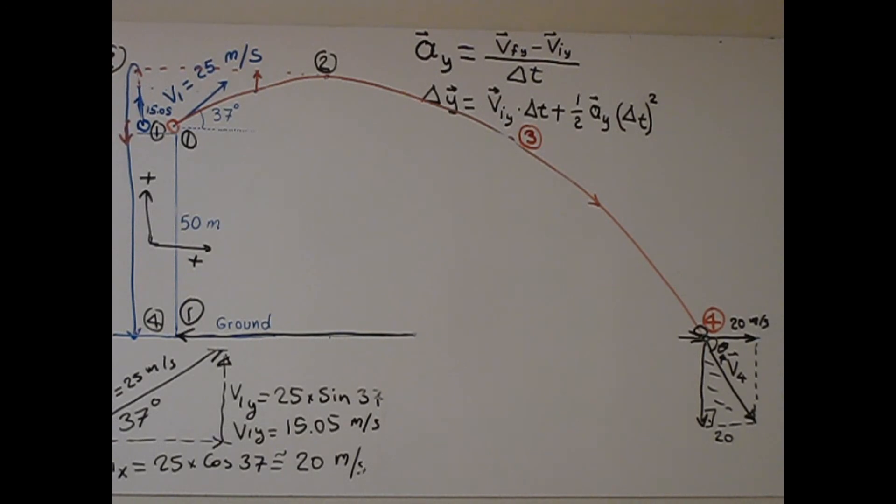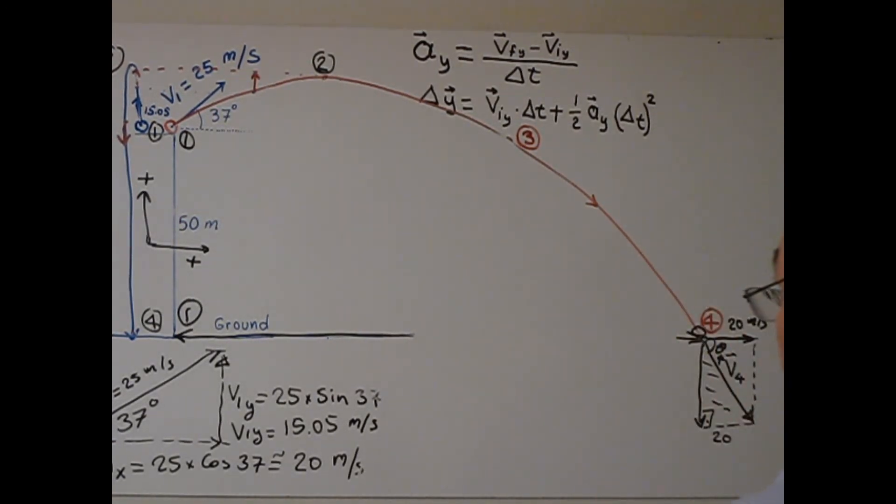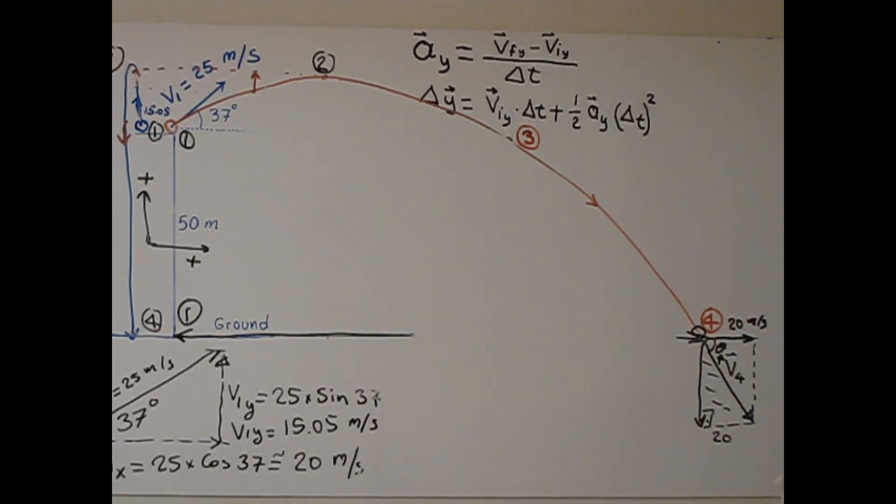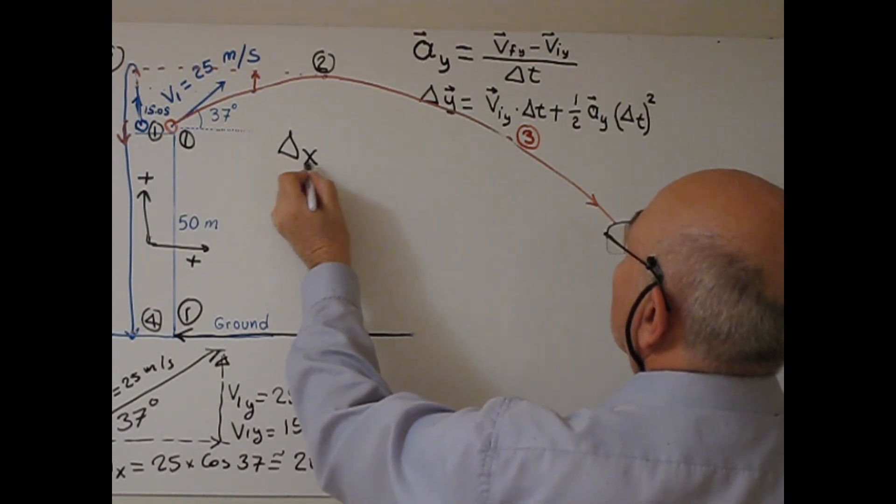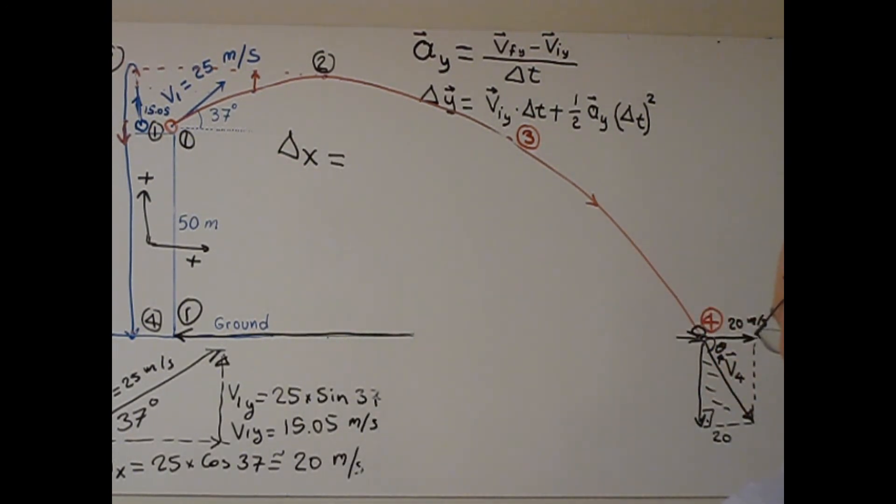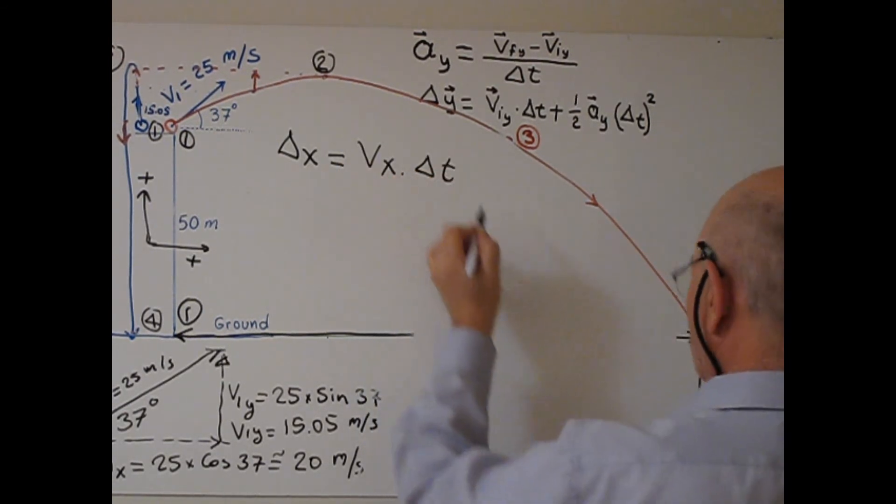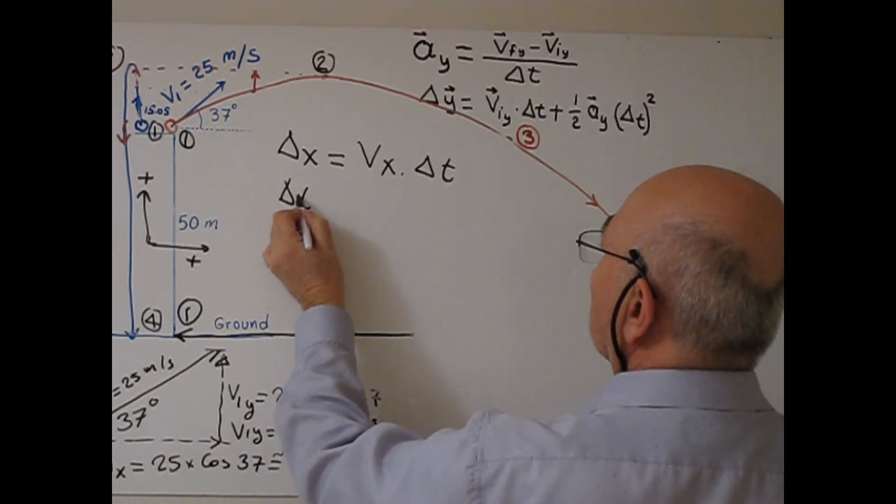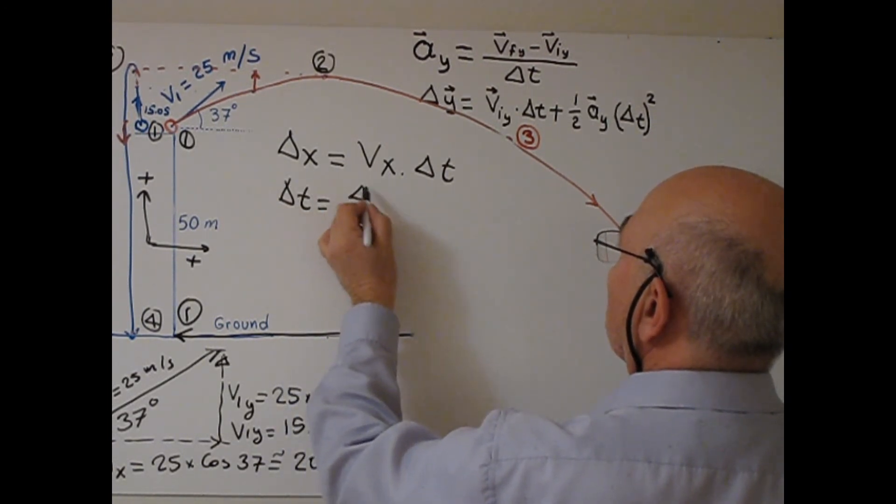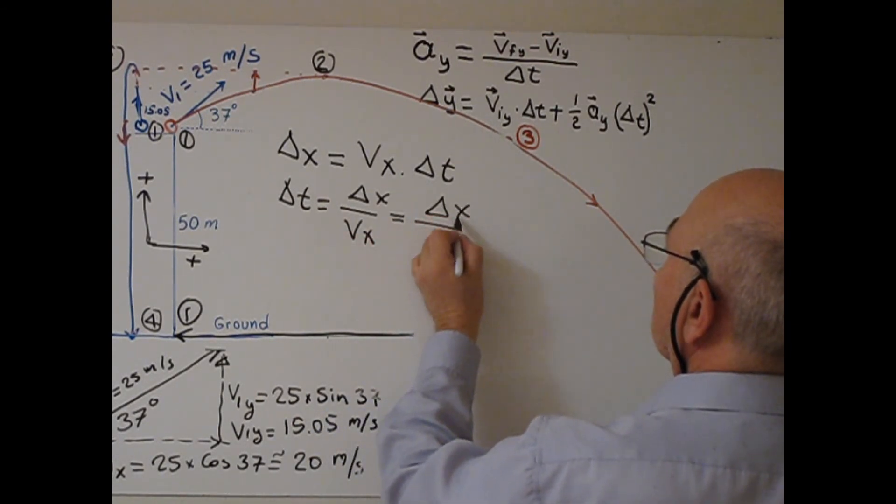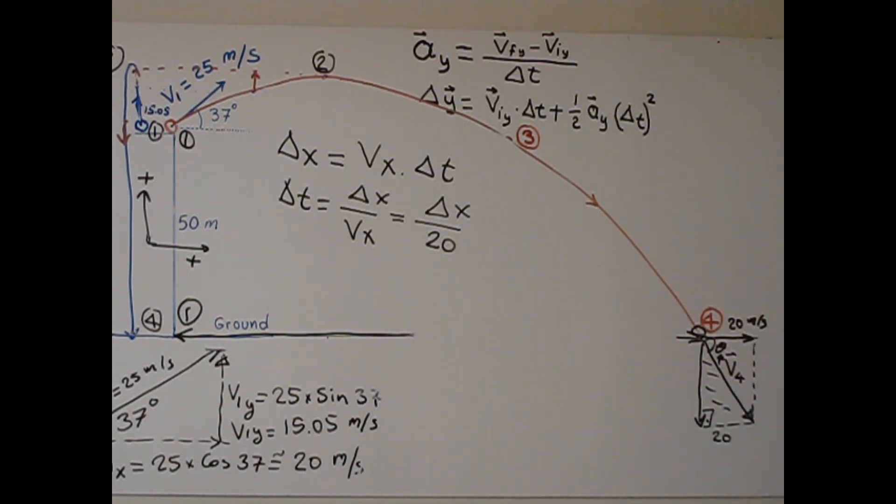I mentioned before the path taken by the red ball is a parabola. I would like to prove this. Delta x uses uniform motion, so vx times delta t. Delta t from here is delta x over vx, so delta x over the horizontal component of velocity, which is 20 meters per second.